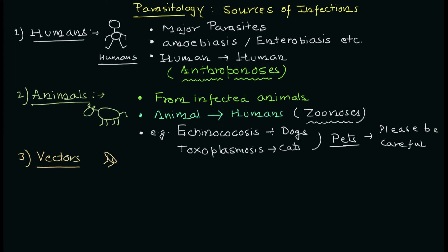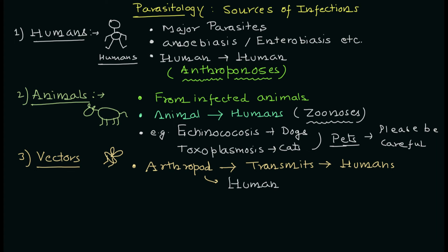Now, if we talk about vectors, they belong to the phylum Arthropoda. Arthropods are the vectors that can transmit infection to humans, and human-to-human infection is also transmitted by these bugs. They are very important especially in completing the life cycle of the parasite.